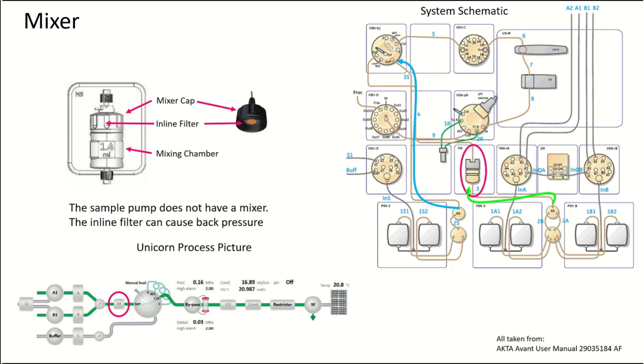It's also important to remember that the system pump has the mixer. If you're loading your sample through the system pump, you're gonna end up getting some band broadening because of the volume of the mixing chamber. The sample pump just bypasses it.